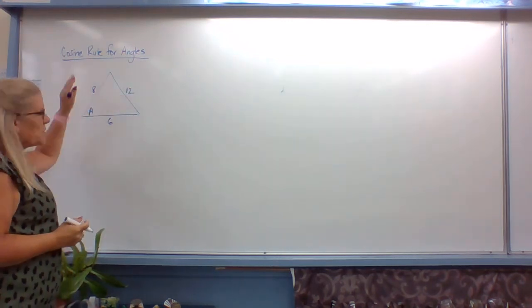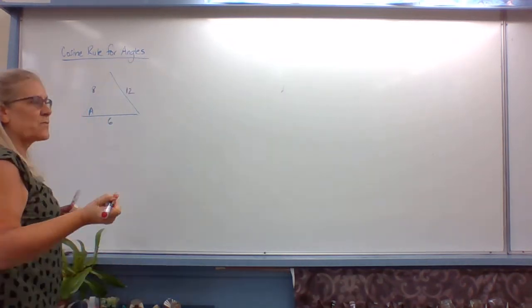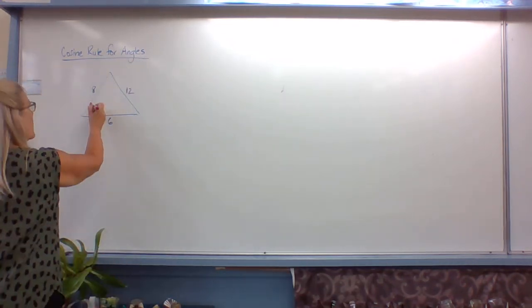Because we've got those three sides, we can label it however we like. So because the formula is written as cosine A, we'll stick with that.